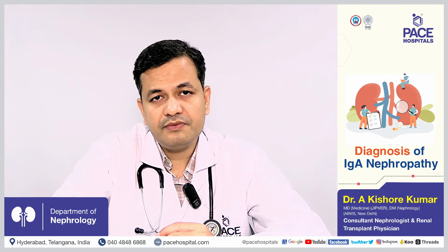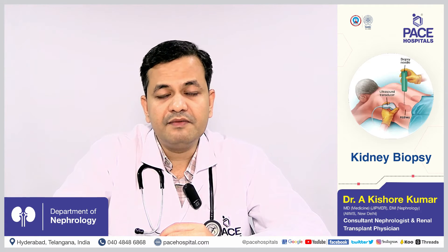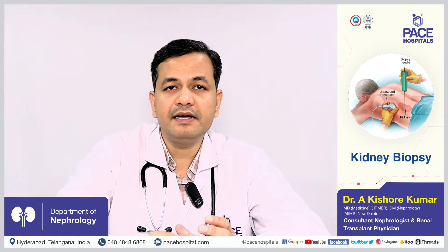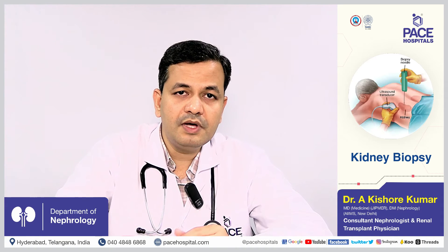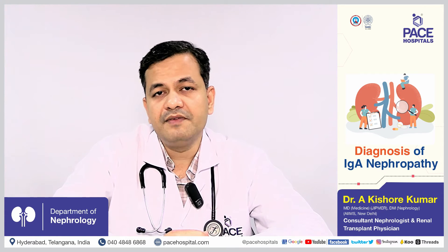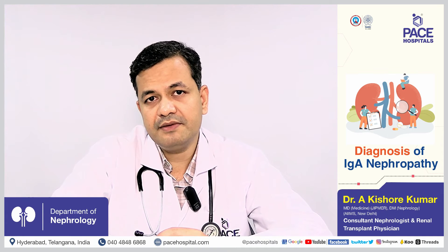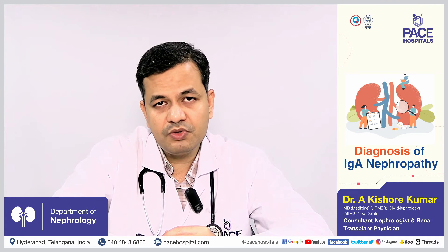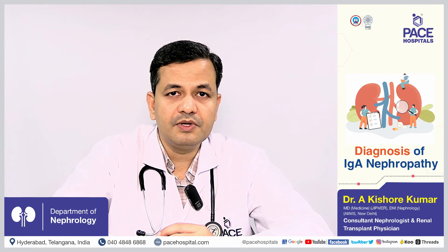The diagnosis of IgA nephropathy is biopsy-based — we cannot diagnose it by blood tests or scanning alone. A kidney biopsy is needed, where a small piece of kidney tissue is removed and examined under a microscope with a variety of stains to identify whether the IgA antibody is deposited in the kidney causing damage. If that is confirmed, we diagnose IgA nephropathy.